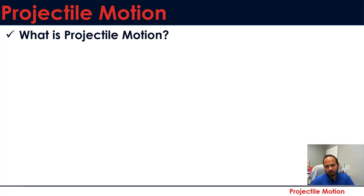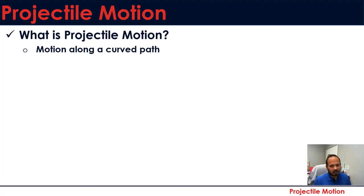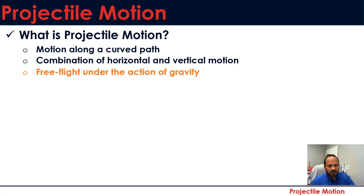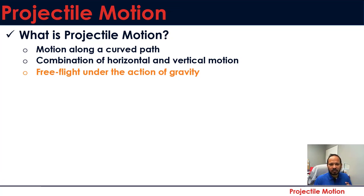So what is projectile motion? First, it is a motion along a curved path, meaning projectile motion is also a curvilinear motion. It is the combination of horizontal and vertical motion, which is also true for general curvilinear motion. The most important part that differentiates projectile motion from general curvilinear motion is that it is free flight under the action of gravity — the only acceleration considered throughout the motion is gravitational acceleration.